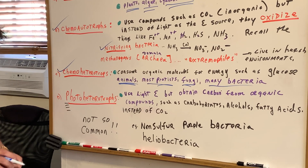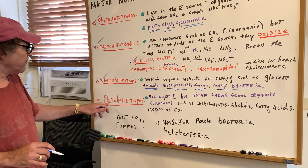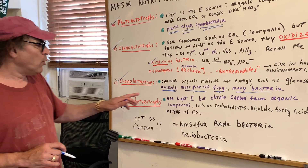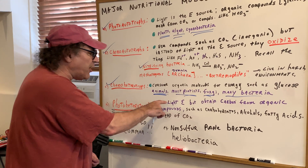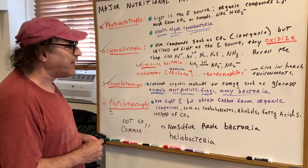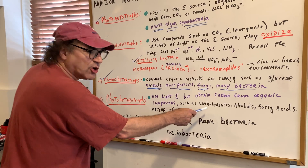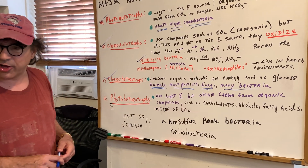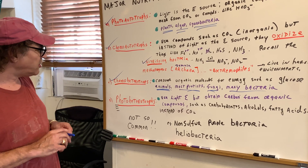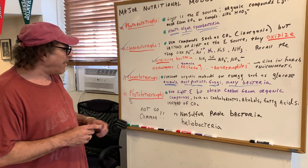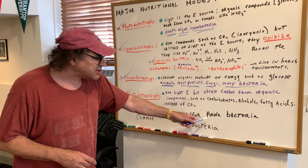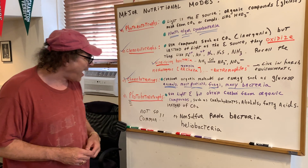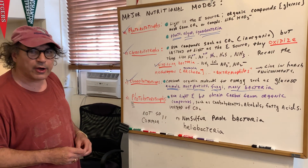The one that's not so common — pretty rare — is the photo heterotroph. Photo means light, so they use light, but they obtain their carbon from organic compounds such as carbohydrates, alcohols, or fatty acids, instead of CO2. Good examples would be the non-sulfur purple bacteria and heliobacteria.